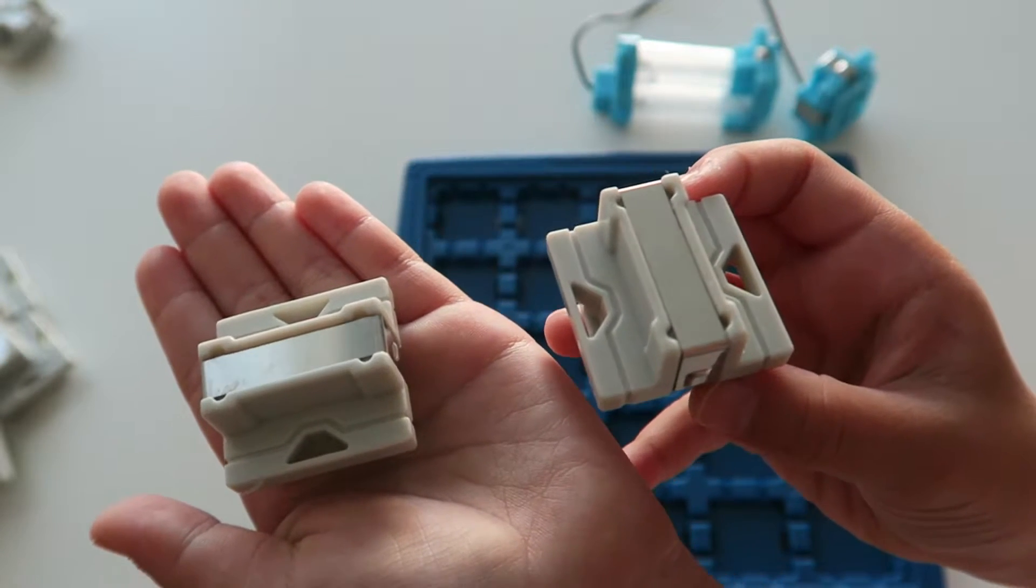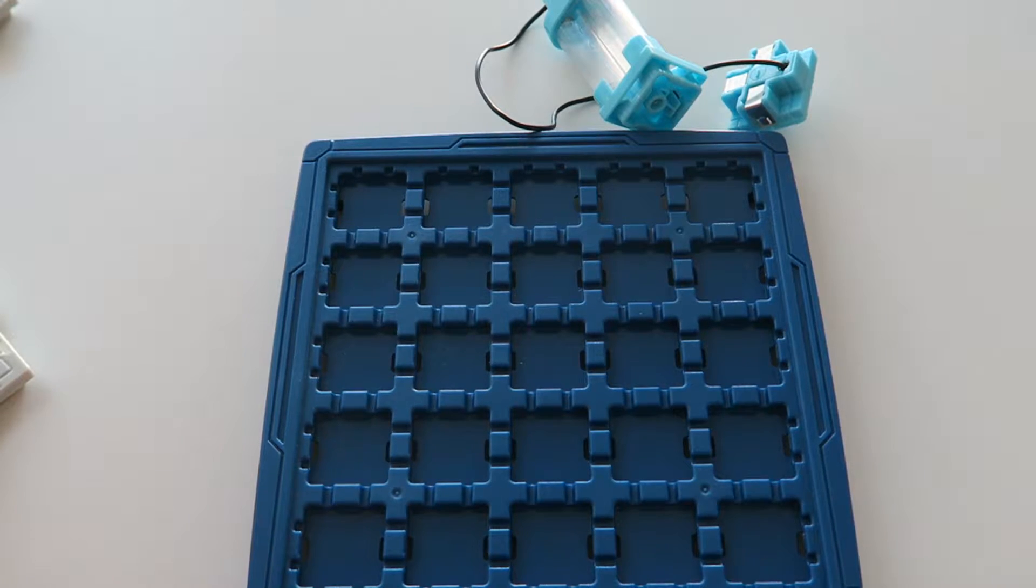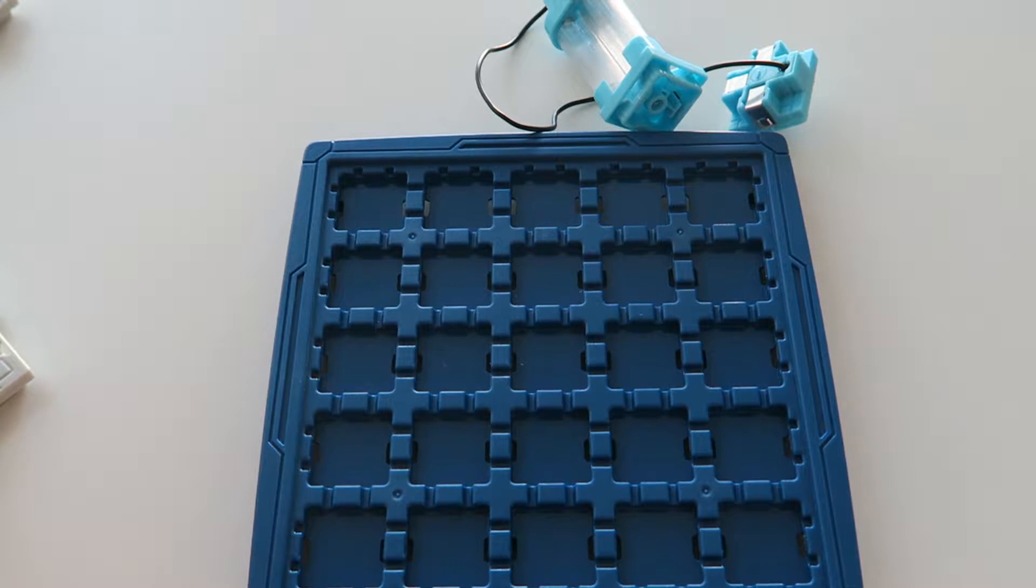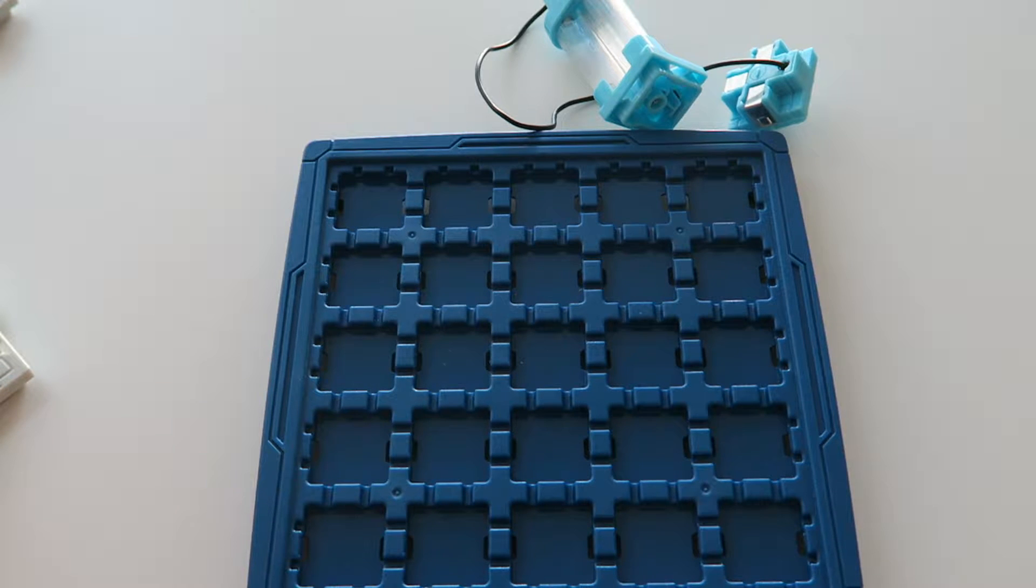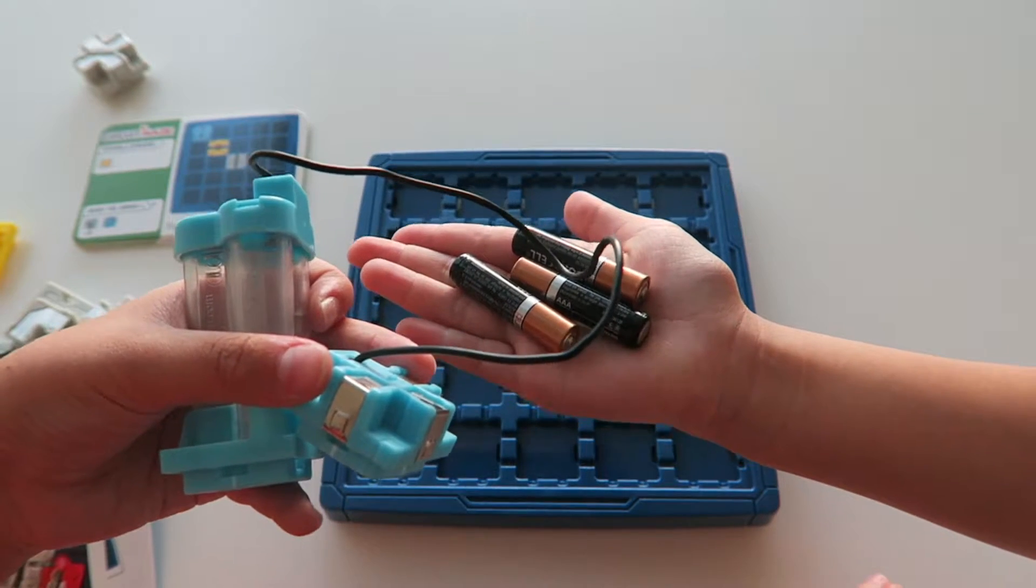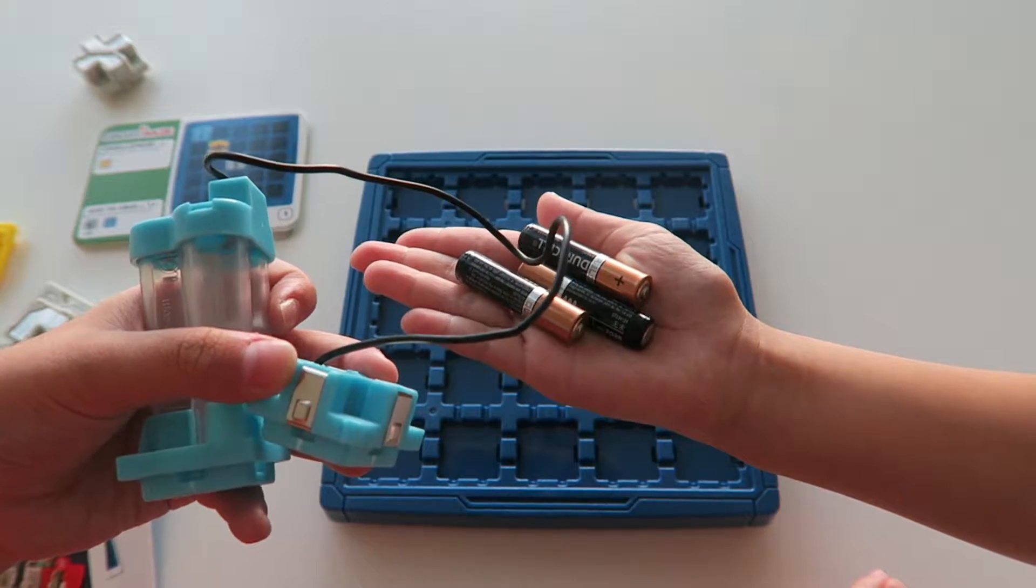The object of the game is to build a continuous metal strip pathway from start to finish that lights up the designated beacons on your challenge card. For this game, we're going to be needing three AAA batteries. So now we're going to pick a challenge card and I'm going to pick a beginner one.